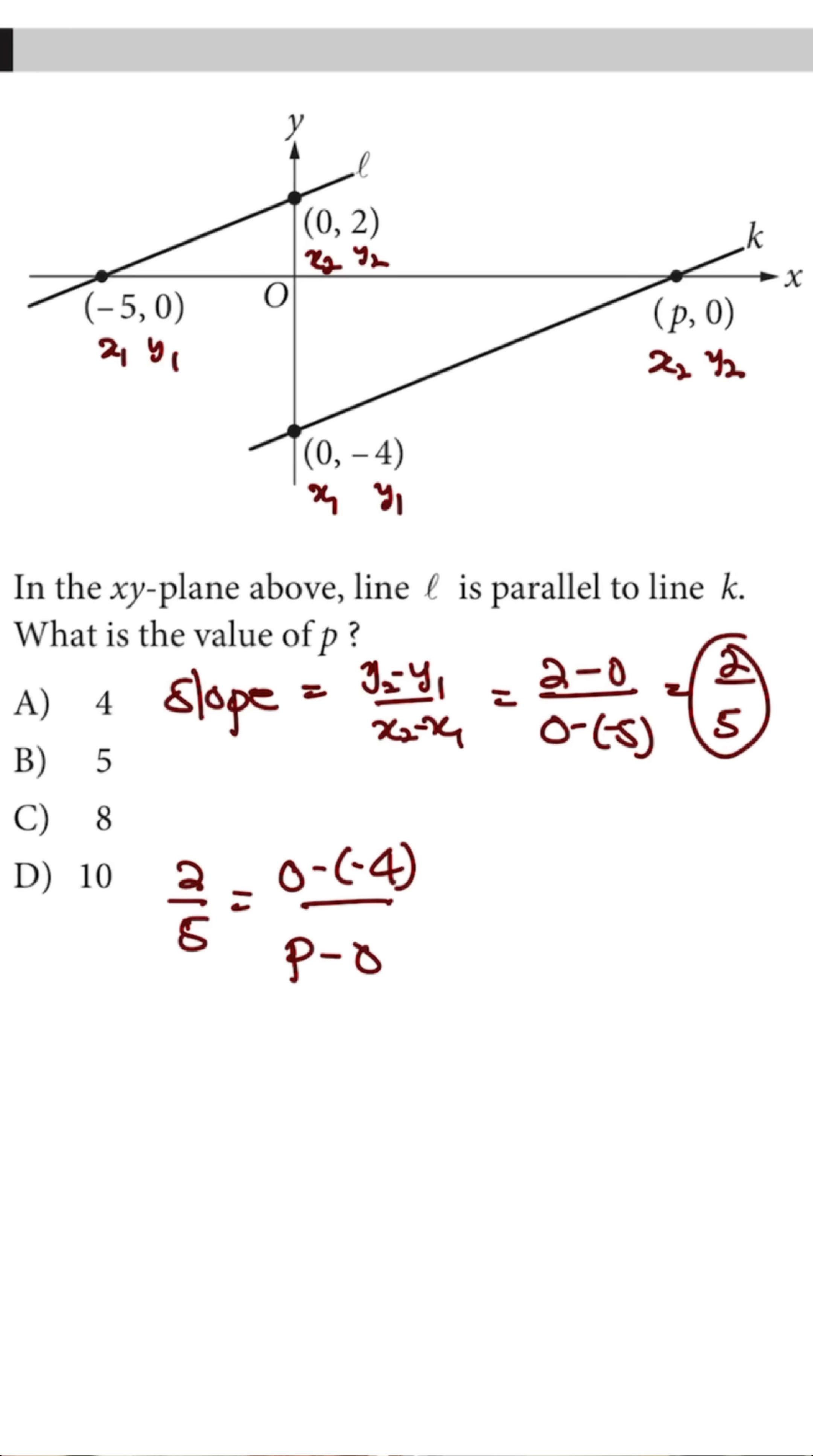So we have 2 over 5 equals 4 over P. Then we cross multiply. So that gives us 2P equals 20 divided by 2 divided by 2. So P will be equal to 10. So the right answer is going to be D.